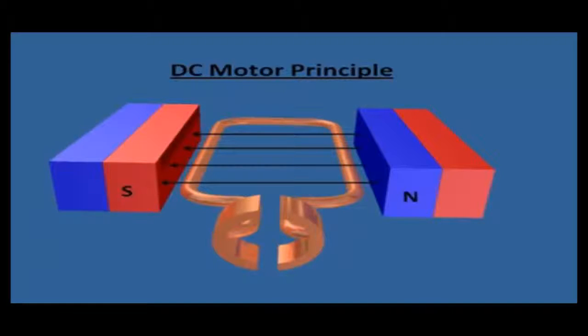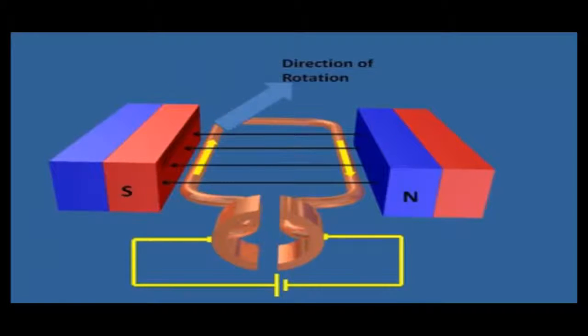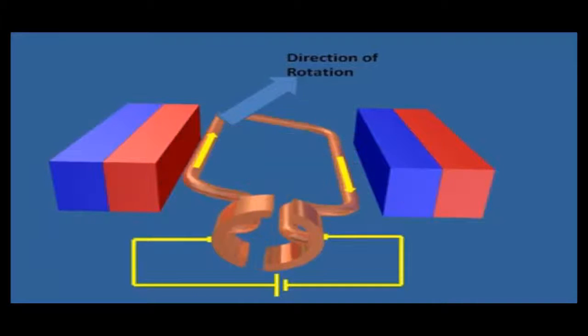First of all, we'll look at the magnetic lines of force from our magnets. Next, we're going to apply current through our armature and we'll see that there will be a resultant force on our armature which is going to cause the armature to slip. This resultant force will continue in the same direction and keep the armature turning.